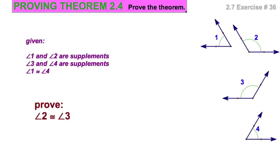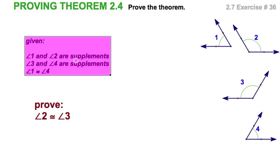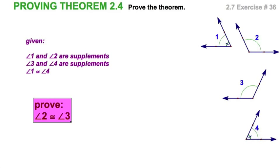Here we go. We're going to prove Theorem 2.4. This is exercise number 36 on section 2.7. I'm starting with these three givens and this diagram. Yes, you have to draw the diagram with a straight edge. I've got three givens saying these two angles are supplementary. These two angles are supplementary, and I'm going to throw these tick marks in because the given says angles 1 and 4 are congruent.